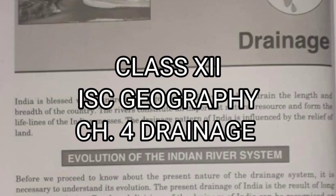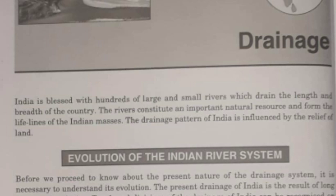Hello students, welcome to my channel. Today we are going to discuss the chapter on drainage - the river system of India. India is blessed with thousands of rivers: large rivers, small rivers, perennial rivers, and non-perennial rivers. Rivers are also a very important natural resource, and all life forms on the earth's surface revolve around water.